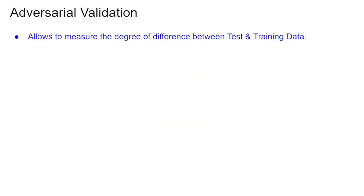What adversarial validation does is basically say: we know that test and train cannot be the same. So can we have a measure of degree — can we allow some measure of degree of difference between them — to state that it is normal for them to differ to that degree? That approach is what we call adversarial validation.